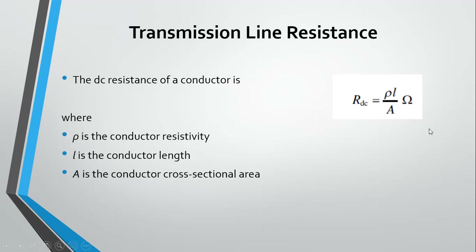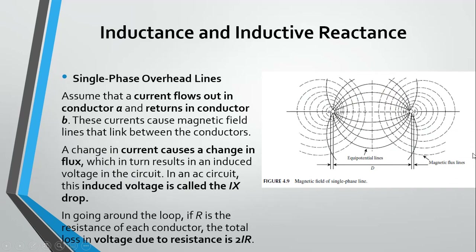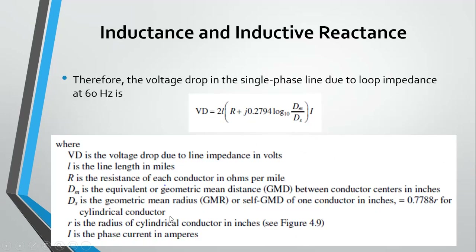For inductance, when current passes through two conductors — say phase one and phase two — due to mutual induction, some current from conductor A is transferred to conductor B and vice versa. This phenomenon is known as mutual induction. The inductance is normally represented by X, and the losses due to inductance are represented by I²X.